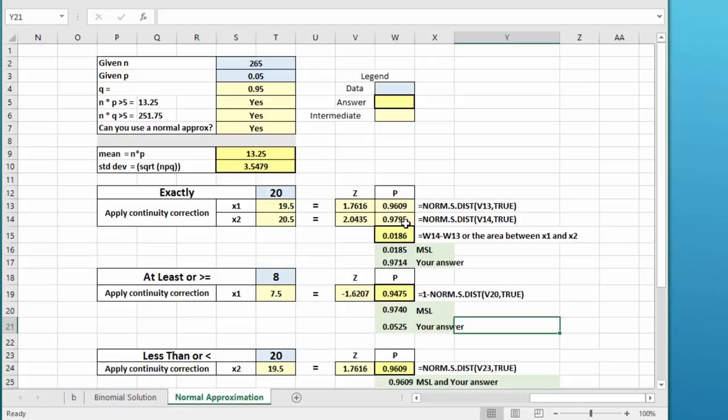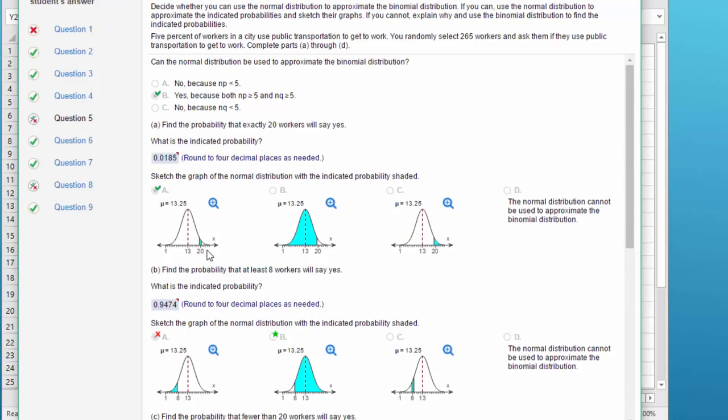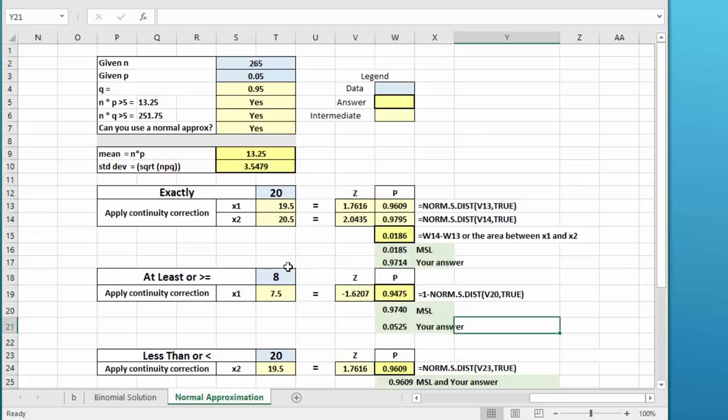Then I used the norm s distribution function in Excel, with a final parameter of true, which gives me the cumulative area under the curve from left infinity up to that value of z. For the lower that's 0.96, for the upper that's 0.97. We want the area between because we want exactly 20. Subtracting those two gives us the area between x1 and x2, and that gives using Excel 0.0186. MyStatLab answer was 0.0185, which is close to what I got with Excel.